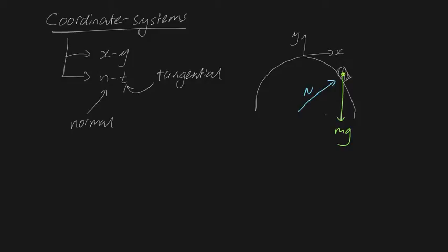But with the n-t coordinate system, we have much less freedom. We must place the coordinate system on the object. t is tangential to the circular path, and n must face toward the center of the circular path. That's the n-t coordinate system.